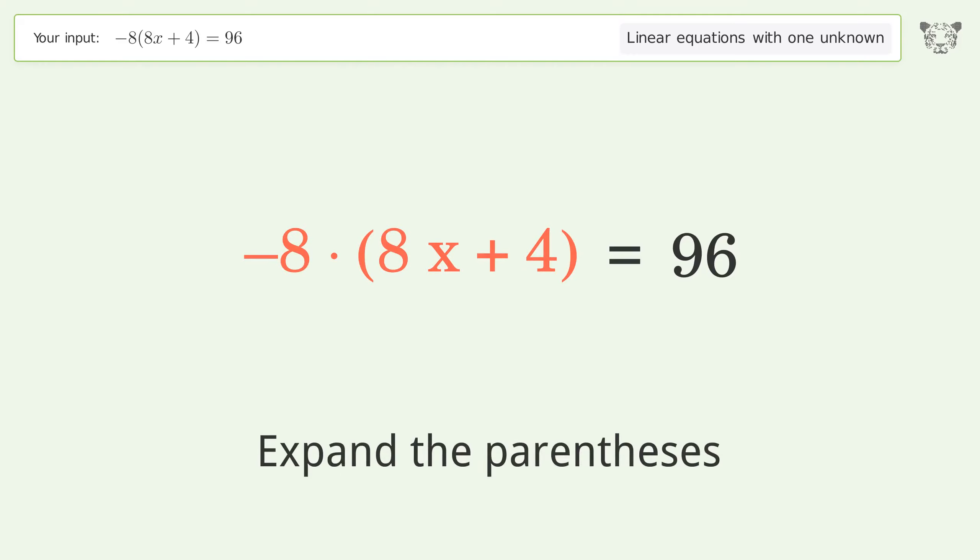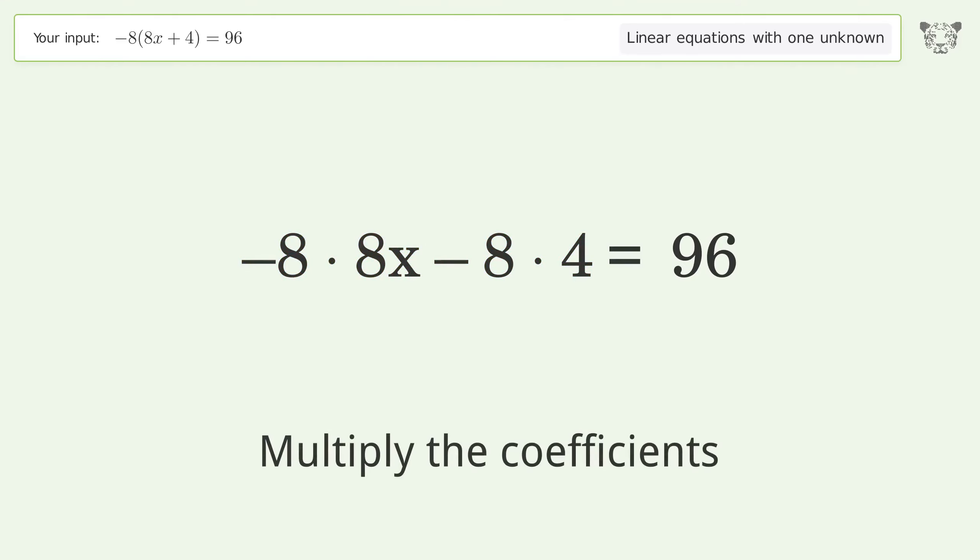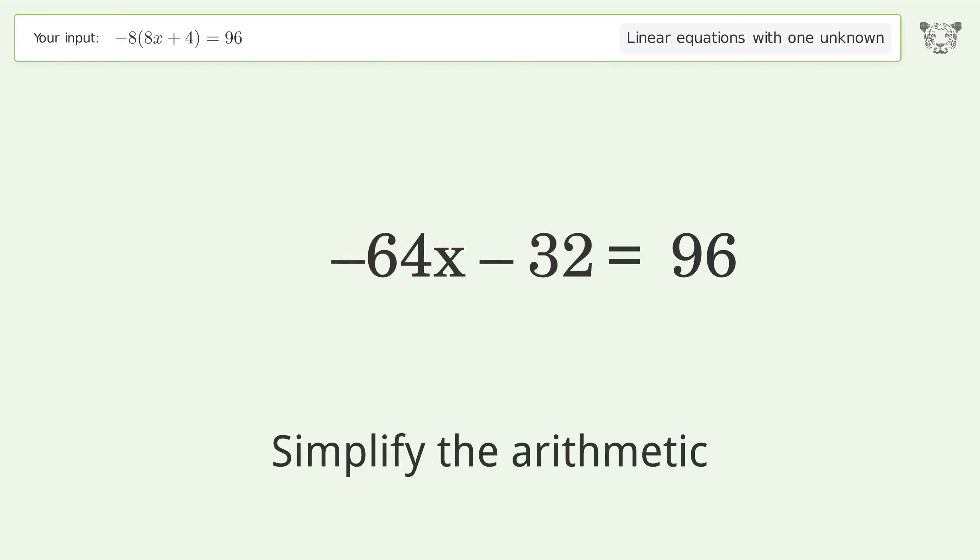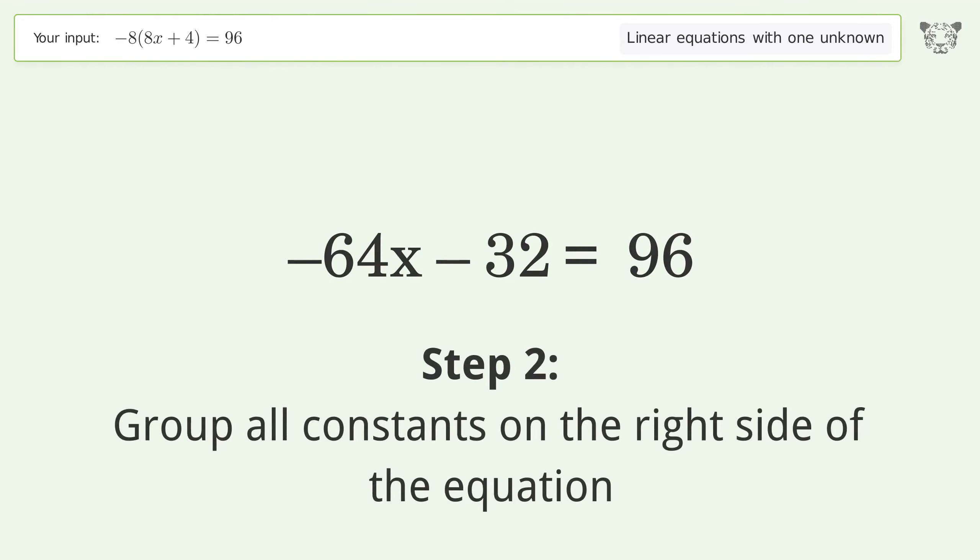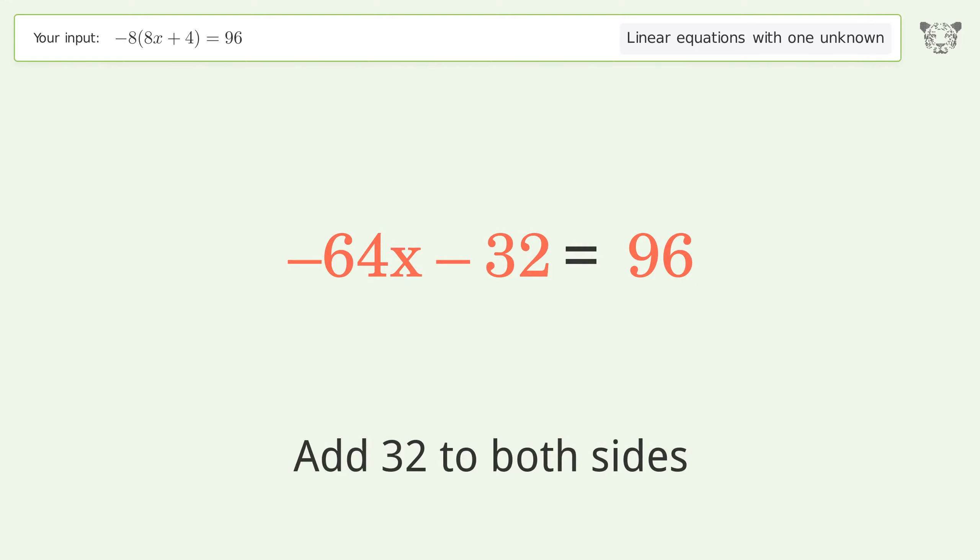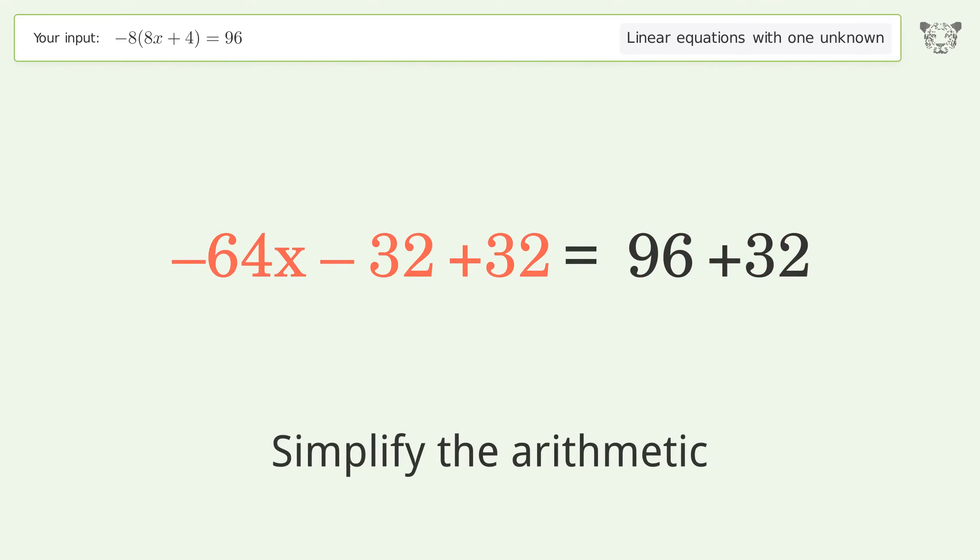Expand the parentheses, multiply the coefficients, and simplify the arithmetic. Group all constants on the right side of the equation by adding 32 to both sides, then simplify the arithmetic.